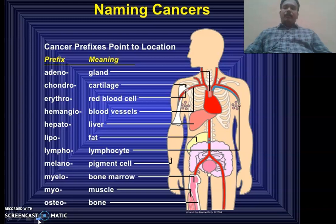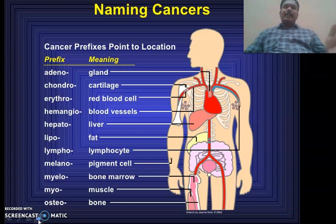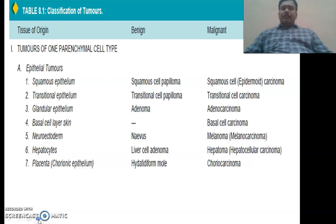For example, osteosarcoma means it is a sarcoma — a malignant tumor of mesenchymal cells — and those mesenchymal cells are the skeletal or bone cells. Hepatocarcinoma, or hepatoma, refers to a malignant tumor of epithelial cells present in the liver. These are the different names by which we call a tissue when it is affected with cancer.